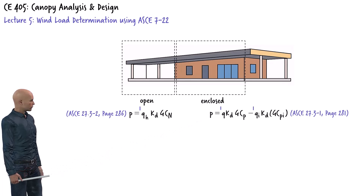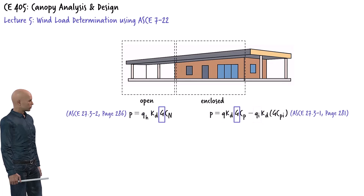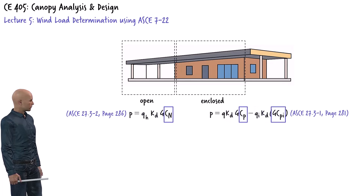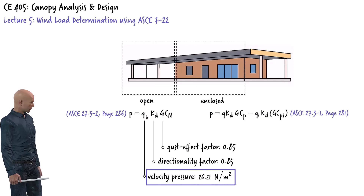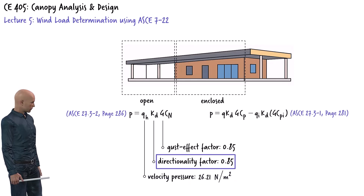These equations are defined in terms of wind velocity pressure, the gust effect factor, the directionality factor, and internal and external pressure coefficients. In the previous lectures we determined the wind velocity pressure, wind directionality factor, and the gust effect factor.